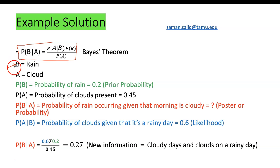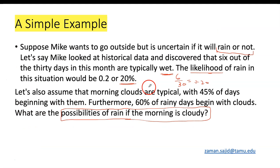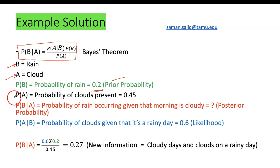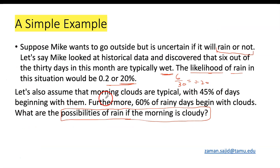Using Bayes' theorem as discussed earlier, let's say event B is rain and event A is cloud. The probability of rain was 0.2 — this is what I am calling the prior probability, because the likelihood of rain was 20 percent or 0.2. This was our prior probability. Now the probability of A — clouds being present — is 0.45, coming from the statement that morning clouds are typical with 45 percent of days beginning with them.